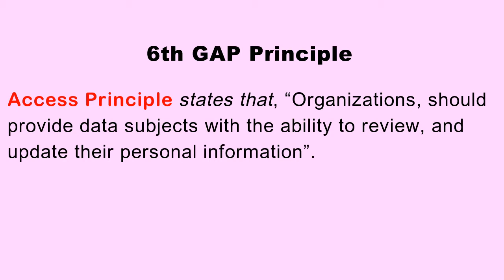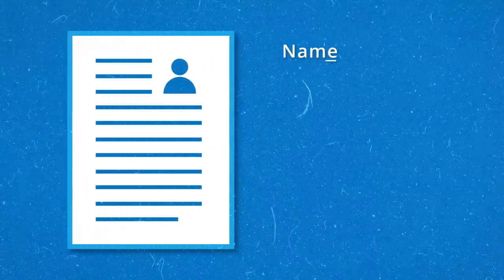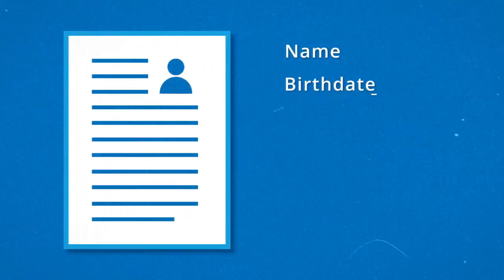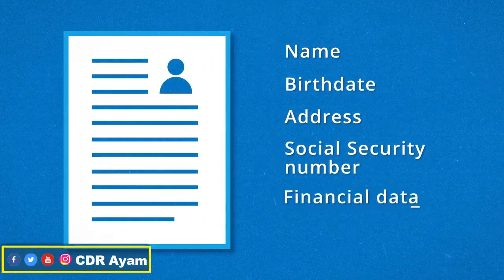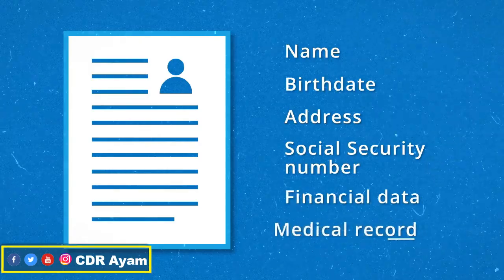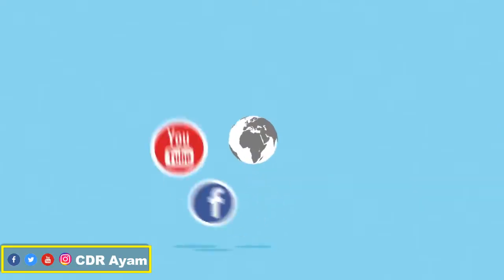The sixth GAPP principle is the Access principle. Based on the access principle, individuals are allowed to edit or update their personal information with any organization and across all social media platforms.